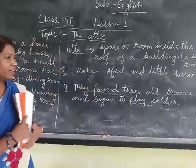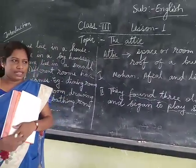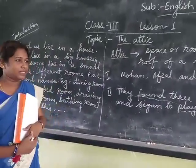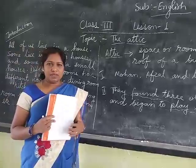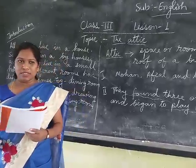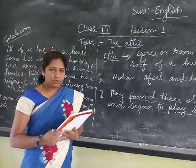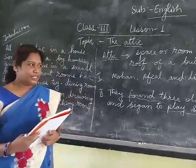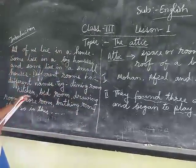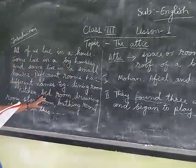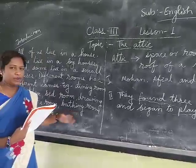In a house there are various rooms. All of us live in a house — some live in a big house, some live in small houses. For example, dining room, kitchen, bedroom, drawing room, storeroom, bathing room, etc.